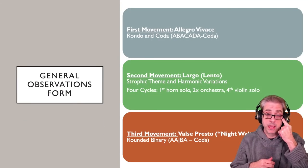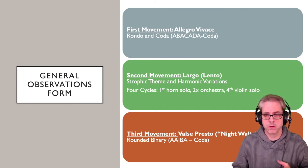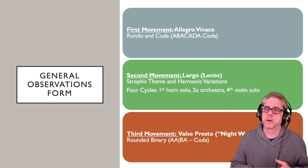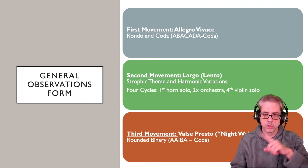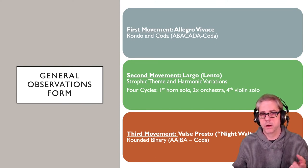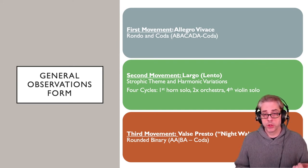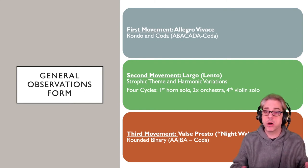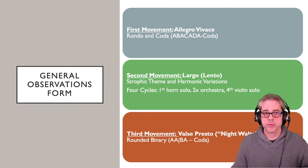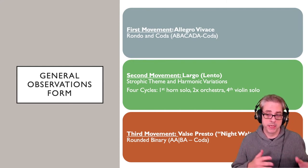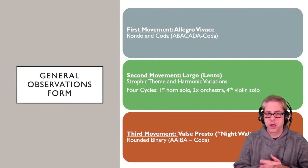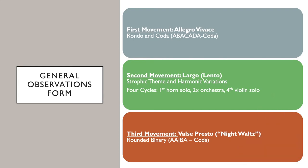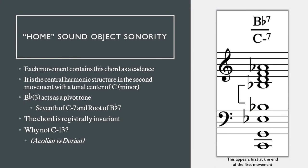The first movement is a rondo — my father even calls it that in his program notes. After examining it, it is in fact a multi-part rondo. The second movement is a long lyrical line that is a strophic cycle, coming back four times: starting with a horn solo, rotating through the orchestra twice, then returning at the end as a violin solo — harmonically varied with a set of harmonic variations. The melody doesn't change in pitch but gets rhythmically varied. The third movement is a waltz in rounded binary form.